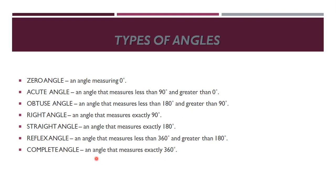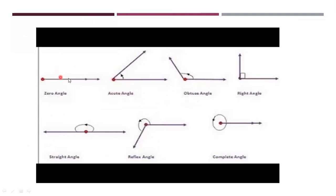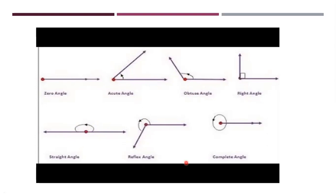These are the types of angles with examples. Zero angle measures exactly zero degrees. Acute angle is less than 90 degrees. Obtuse angle is between 90 and 180 degrees. Right angle is exactly 90 degrees. Straight angle measures 180 degrees. Reflex angle is between 180 and 360 degrees. Complete angle is exactly 360 degrees.